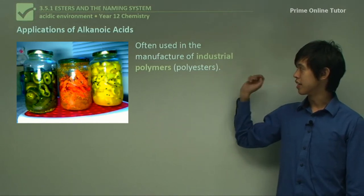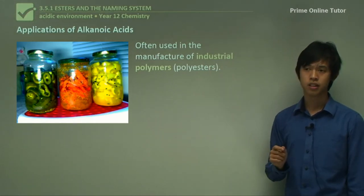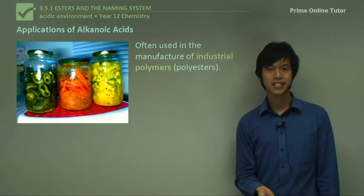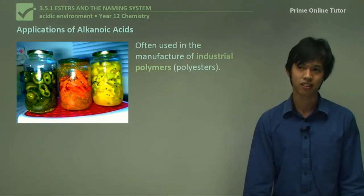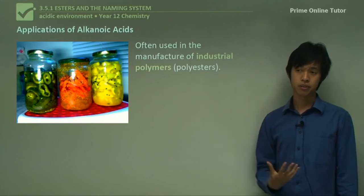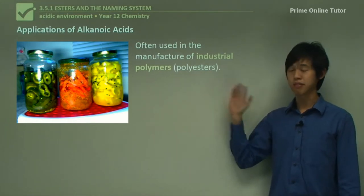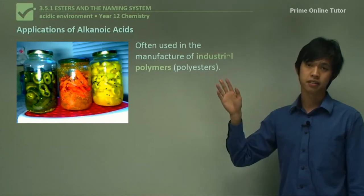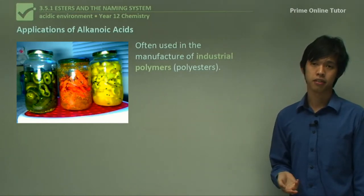Often we see this used in industrial polymers. So there's a polymer called polyester. Surely you've seen it by now as a Year 12 student. Polyester is a fabric, and it comes from these alkanoic acids. One of the components is alkanoic acids.